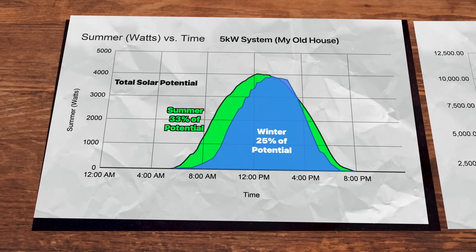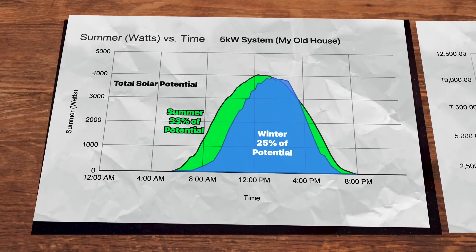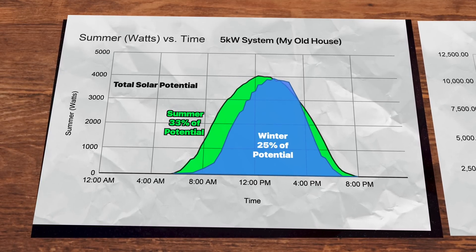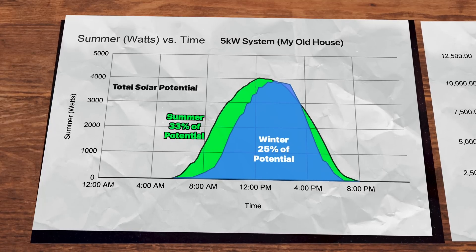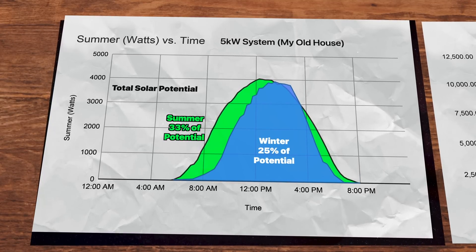This data is for a 5-kilowatt solar system. Actually, my old solar system on my old house. At its peak, it was producing 4,000 watts, which is awesome. More than enough to power your whole house, including AC or heating.